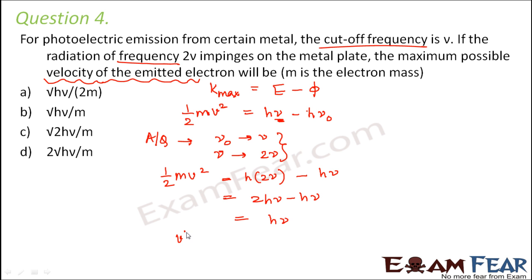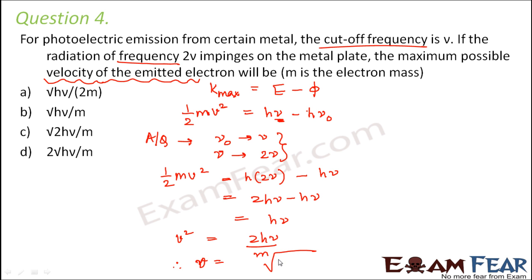Therefore, v squared is equal to 2H-nu divided by m. Therefore, v is equal to the square root of 2H-nu divided by m. So C is the right option.